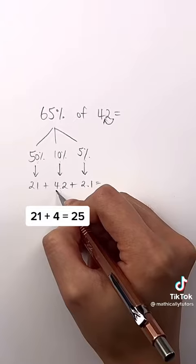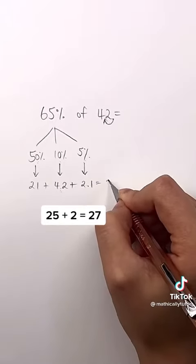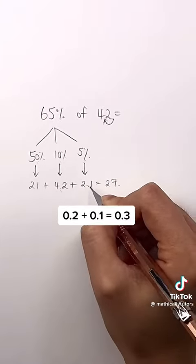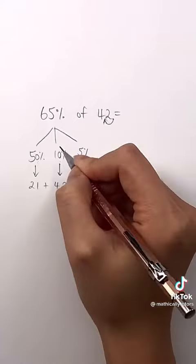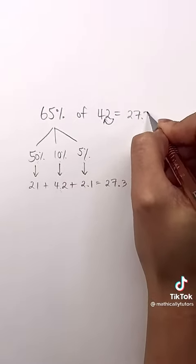21 plus 4 is 25, 25 plus 2 is 27, and then 0.2 plus 0.1 equals 0.3. And so 65% of 42 is 27.3.